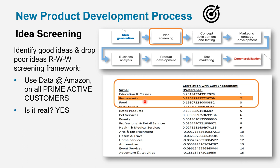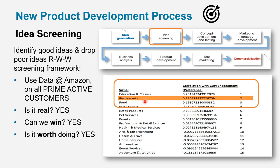The RWW framework asks: is this a real product that you can give to your customers? Absolutely — yes. Can you win at it? Is it important? Will it differentiate and compete at a global or local level? Our answer was yes. Restaurants are huge — it's a billion-dollar industry, and we know our customers spend a lot of money on high-end restaurants. And is it worth doing? Absolutely. We wanted to be the one place that our Prime members go to for all their purchases. So the RWW was yes, yes, yes.